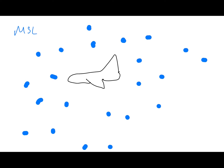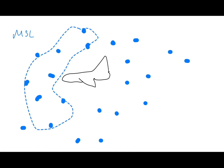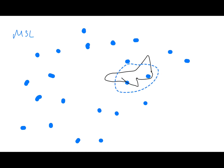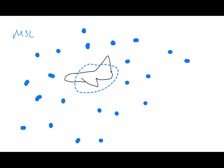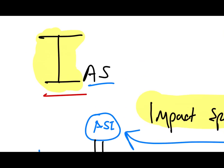Think about it this way: imagine a drawing of an aircraft, and the blue things are air molecules. Flying at mean sea level, the indicated airspeed is the impact speed of those air molecules onto the aircraft. As the aircraft is flying, it's hitting all these molecules, and the speed at which they impact each other is the impact speed, which translates to the pressure difference, which translates to your indicated airspeed.